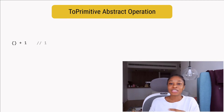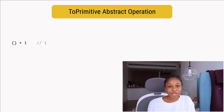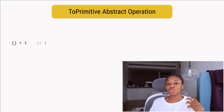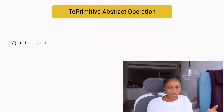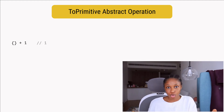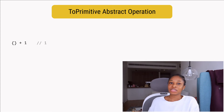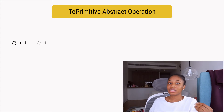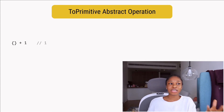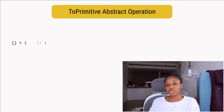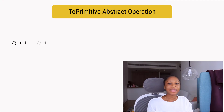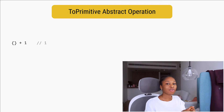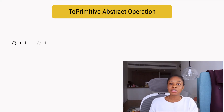The ToPrimitive abstract operation is solely responsible for converting non-primitive values to primitive values. Its name basically explains what it does — it takes a non-primitive value and converts it to a primitive value. Let me explain how that conversion happens.